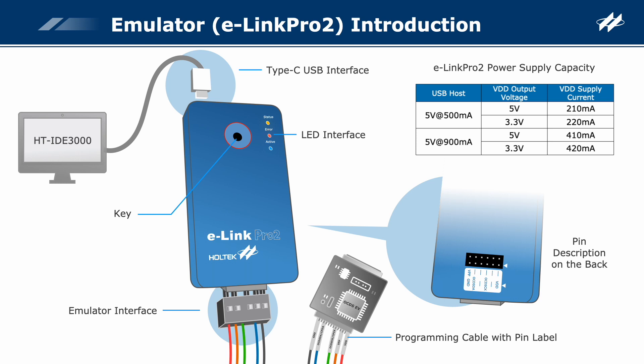In addition to emulation and programming functions, the E-Link Pro 2 can also download Flash IC, EEPROM IC, and supports USB, I2C, SPI, UART bridge and other functions when being used with other Holtek software.